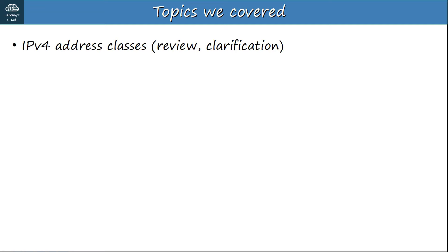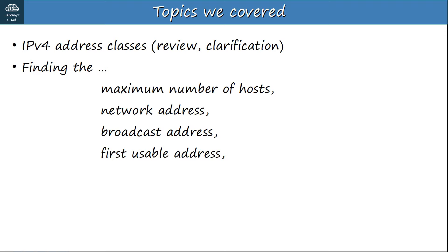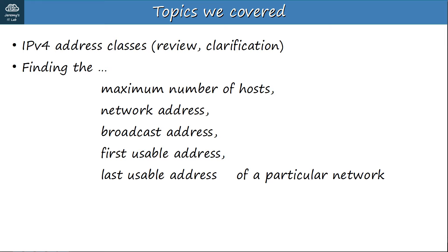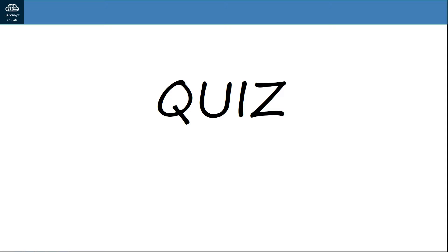Now let's review what we covered. We covered IPv4 address classes, which we also covered in part 1 but reviewed in this video. We talked about how to find the maximum number of hosts, network address, broadcast address, first usable address, and last usable address of a particular network. Finally, I showed you how to configure IP addresses on Cisco devices, as well as SHOW commands to gather information about interfaces.